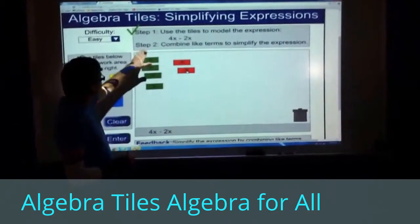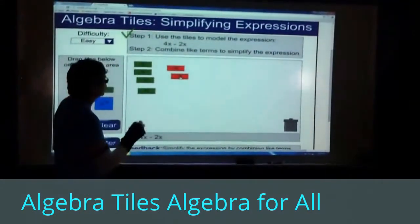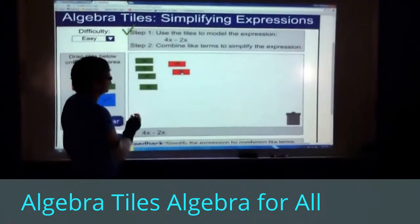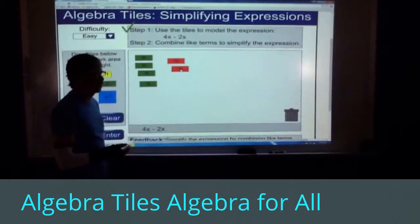Step two means we're going to combine like terms to simplify the expression. In this case, x's are like terms, and more specifically, an x and a negative x are what we call a zero pair.